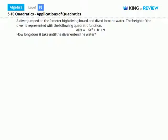A diver jumped on the nine meter high diving board and dived into the water. The height of the diver is represented with the following quadratic function: H of t equals negative five t squared plus four t plus nine.